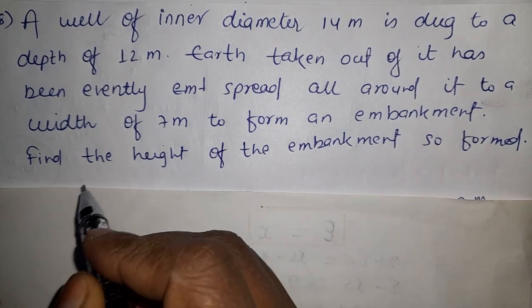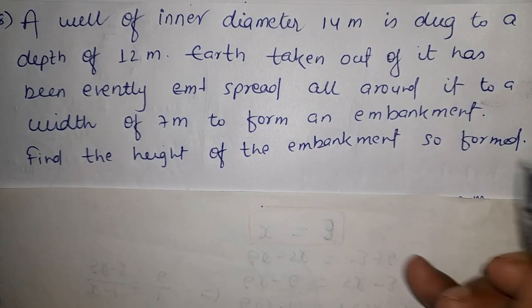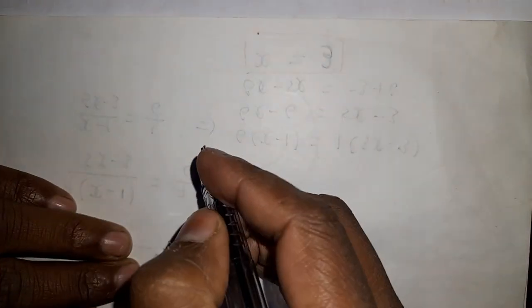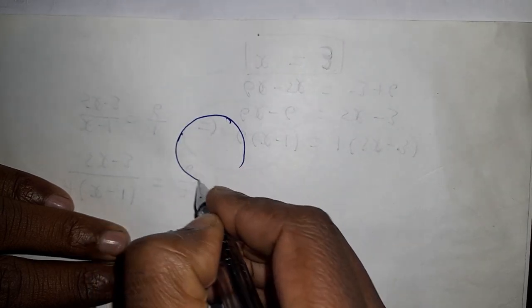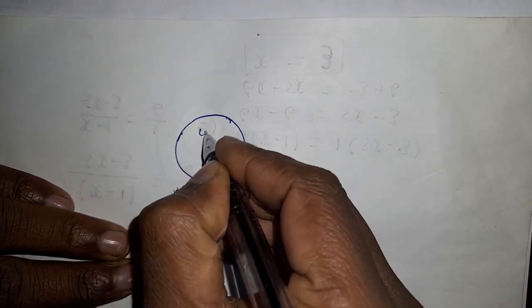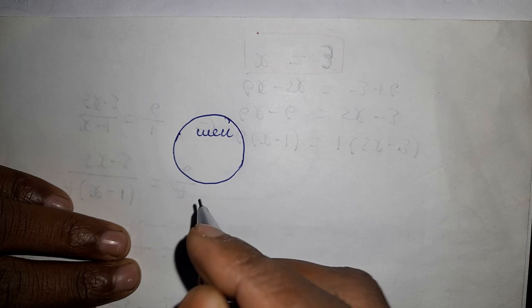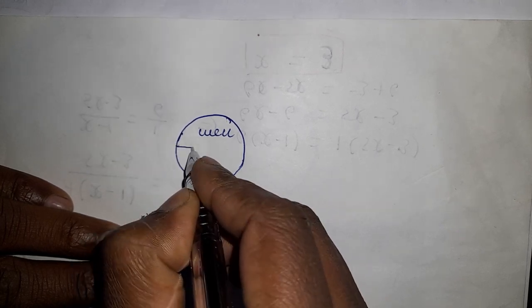Find the height of the embankment so formed. Looking at the question, we have a well - what is it? It's a well whose internal diameter is 14 meters.